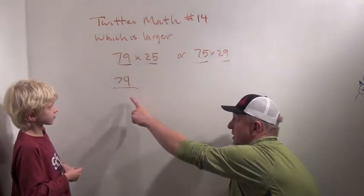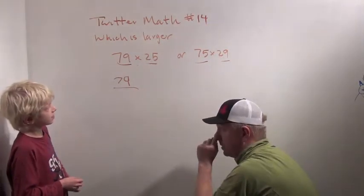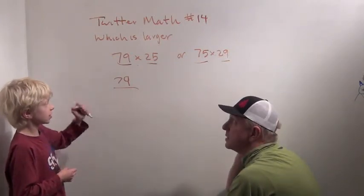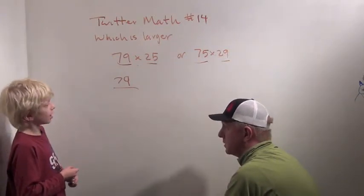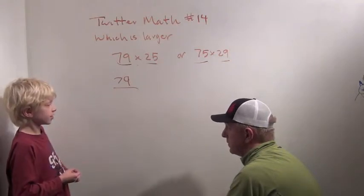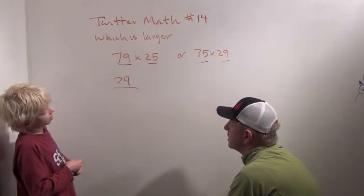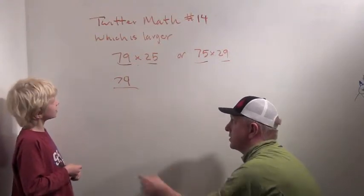So we've checked up to 6. Does 7 go in? 7 goes into 70, but 7 doesn't go into 9. So not 8, because it's not even. 9? No. So 79 is prime.